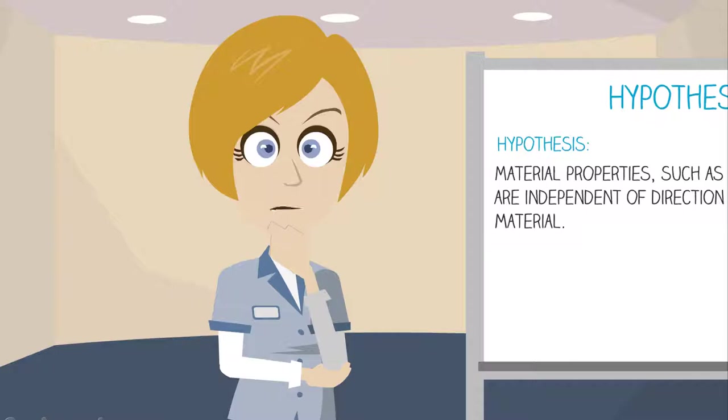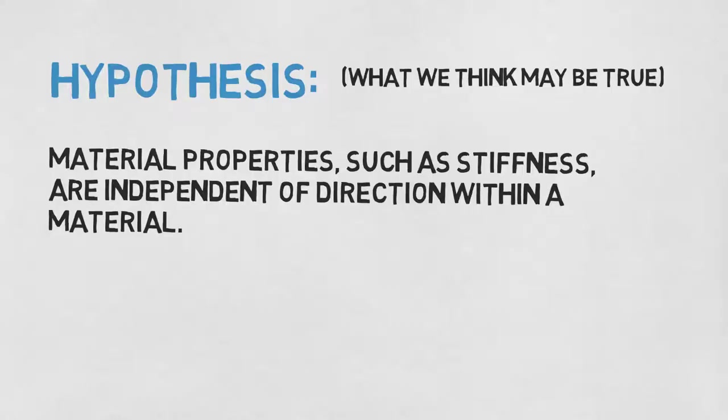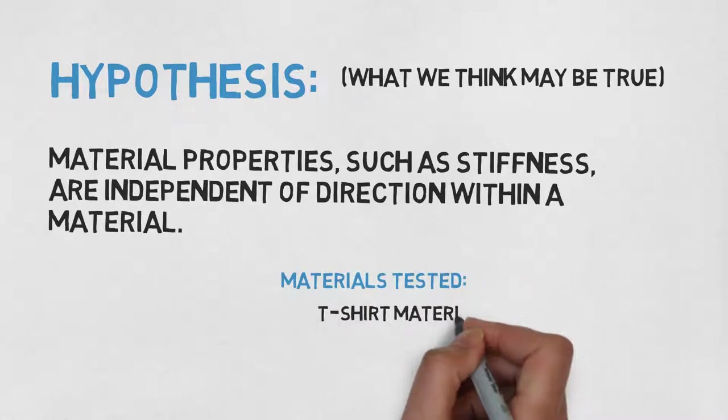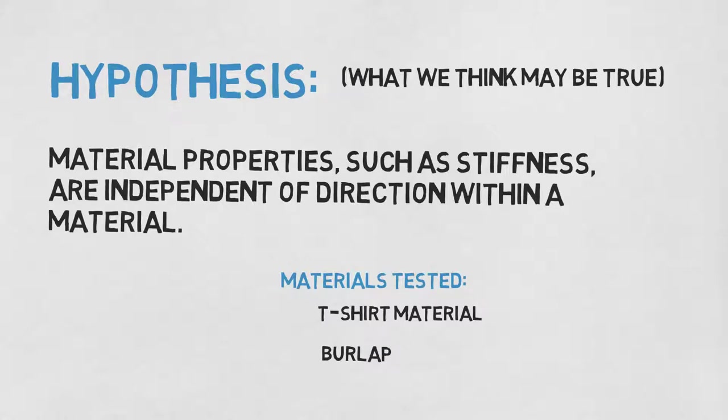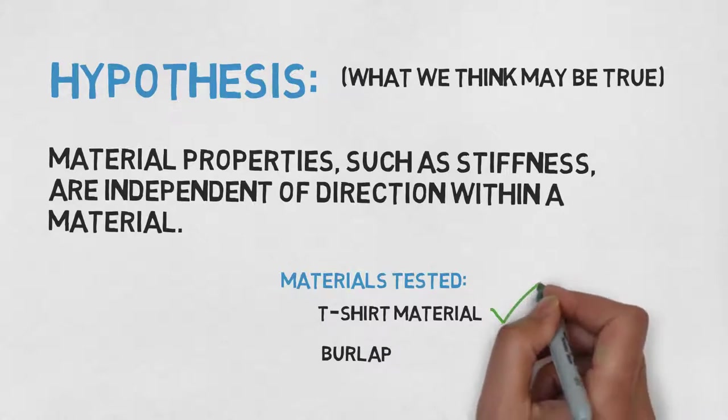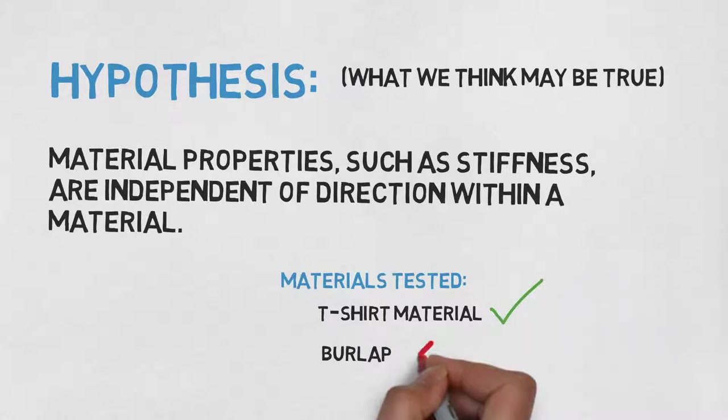So what can we conclude from our experiment? At first, we made the hypothesis that material properties are independent of direction within a material. But in our experiment, we found that although this is true for some materials, like the t-shirt material, it is certainly not true for all materials. Our hypothesis is thus proved wrong, at least for some of the time.